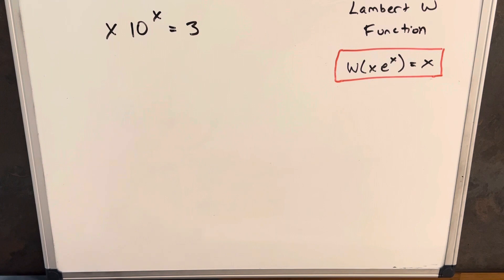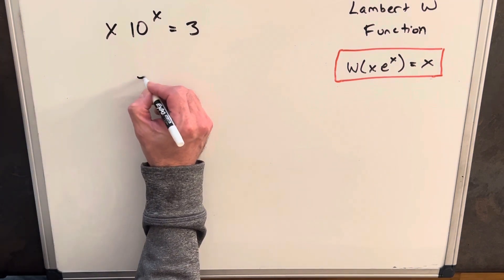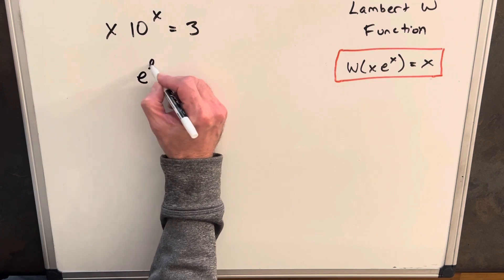And the good thing about that is whenever we have a number, we can always get our e by rewriting it. So for our 10, we can write it as e to the ln 10.